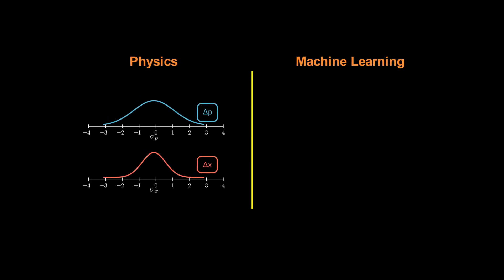And here's a nice analogy for physicists. Bias and variance behave a bit like position and momentum in the Heisenberg uncertainty principle. In quantum mechanics, you can't measure position and momentum both with arbitrary precision. Reducing uncertainty in one increases uncertainty in the other.